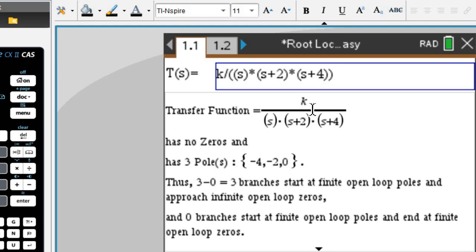So this is the same transfer function here in pretty print. It obviously has no zeros because there's no s variables in the numerator. It has three poles which can be seen from the denominator, therefore it has three branches that start at finite open loop poles and approach infinity,